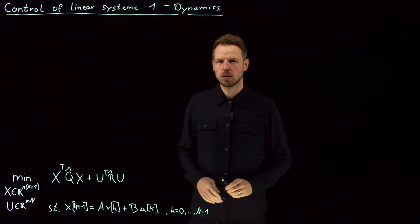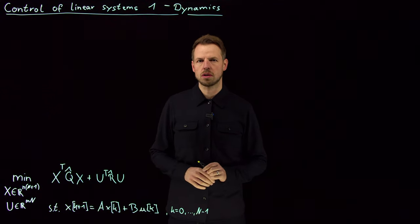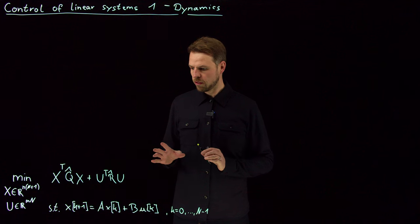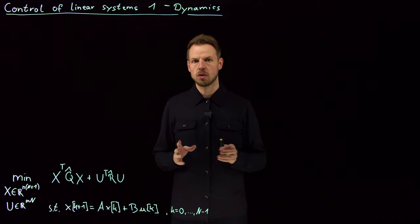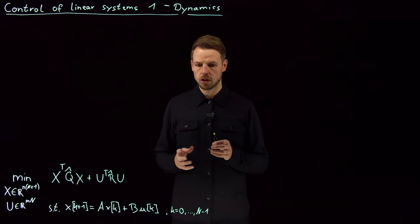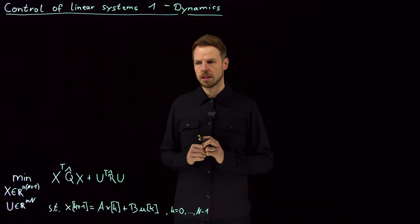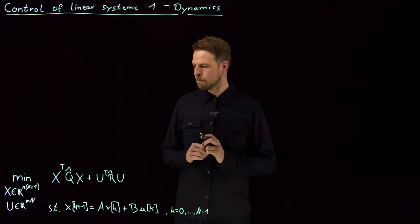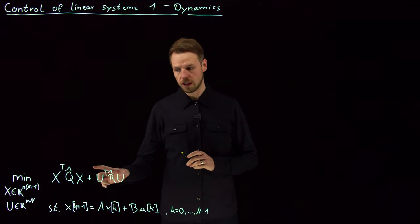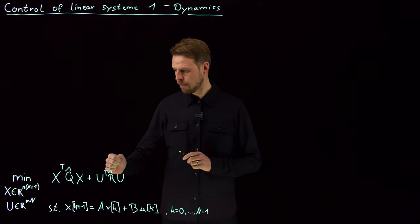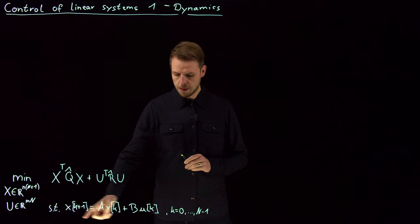Hello everyone, welcome back to this mini session on control. What we have seen until now was a general setting of how to formulate a control problem — an optimal control problem for dynamical systems. What we saw is that we have some kind of loss function or objective function, and we have a dynamic constraint.